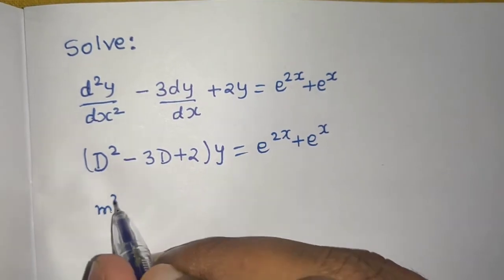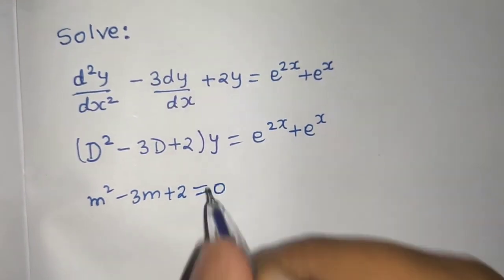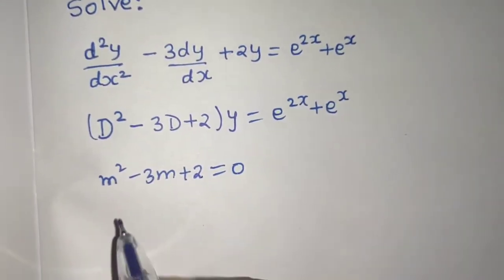So m² minus 3m plus 2, and now equate it to 0. This is your auxiliary equation.